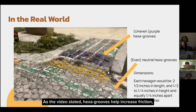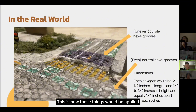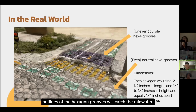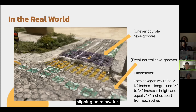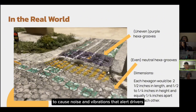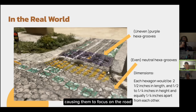As the video stated, hexagrooves help increase friction, irrigate rainwater, and warn drivers. The indented hexagonal outlines of the hexagrooves will catch the rainwater, bring it to the drain, and prevent accidents that involve vehicles slipping on rainwater. The height changes for purple hexagrooves would act as a warning signal to cause noise and vibrations that alert drivers in areas where they need to exercise caution, causing them to focus on the road and preventing accidents caused by distracted drivers.